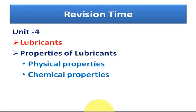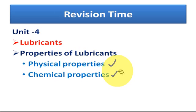In today's class we discussed the properties of lubricants — both physical and chemical. Of the physical properties, we covered cloud and pour point, which determines the minimum working temperature range, indicating suitability in cold conditions, and flash and fire point, which determines the maximum working temperature range, indicating suitability in hot conditions.